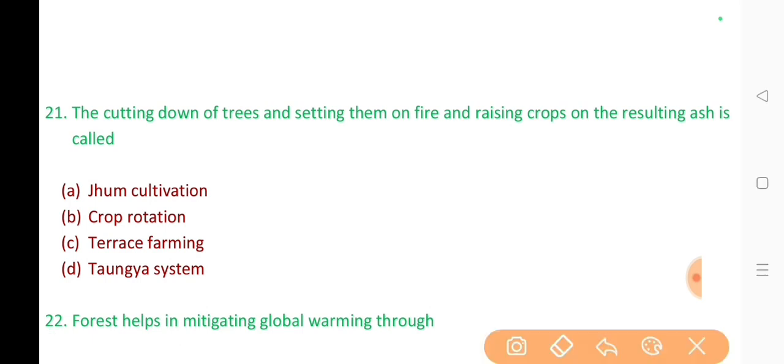21. The cutting down of trees and setting them on fire and raising crops on the resulting ash is called? The correct answer is option A. Jhoom cultivation.